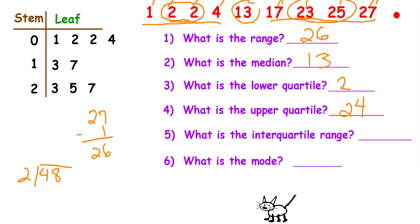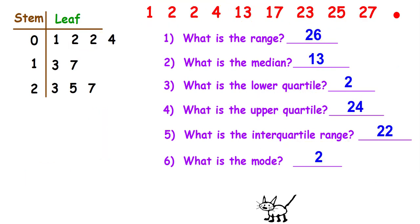The interquartile range, this is the sad thing is I've just forgot to tell you that. The interquartile range is the upper quartile minus the lower quartile. So the interquartile range is 22. And when I'm asking you what is the mode, I'm going to look over here at my data set and I can see that 2 is my mode. And now I'm going to try and make a box and whisker plot. So using the information that we just got, I need you to draw a box and whisker plot. Pause your video and do it on your own.